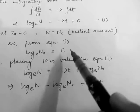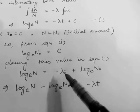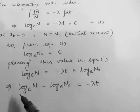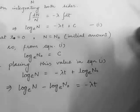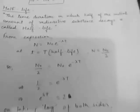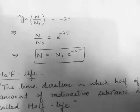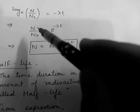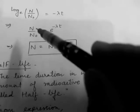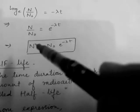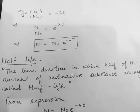Substituting C back into equation 1: ln(N) equals minus λt plus ln(N₀). Rearranging: ln(N) minus ln(N₀) equals minus λt. Using the log rule ln(a) minus ln(b) equals ln(a/b), we get ln(N/N₀) equals minus λt. Converting from log to exponential form: N/N₀ equals e raised to the power minus λt, so N equals N₀ e^(−λt). That is the expression of Rutherford and Soddy's law.